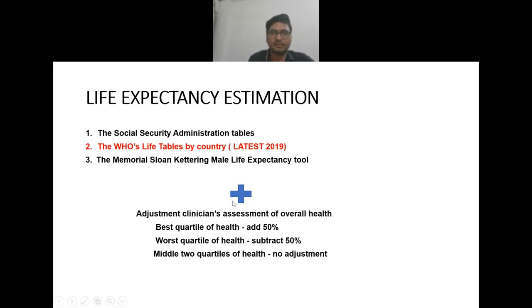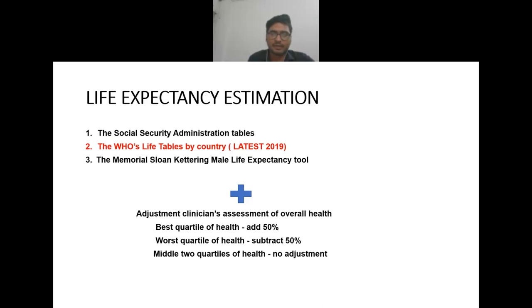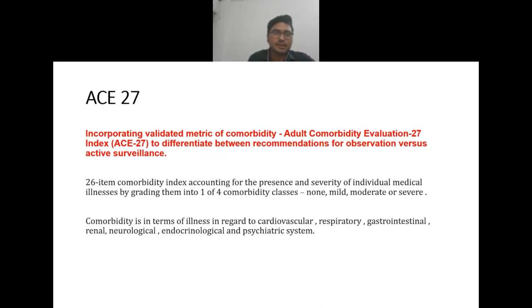The Memorial Sloan Kettering male life expectancy tool is also used, and the survival estimate is adjusted by the clinician with assessment of overall health. You can add 50% if the patient is in best health, subtract 50%, or make no adjustment. A new feature incorporated in the recommendation between observation and active surveillance is the ACE-27 Adult Comorbidity Evaluation Index.